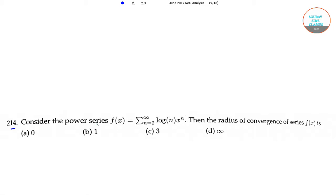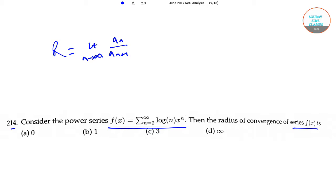The question is: consider the power series f(x) equal to summation from n equal to infinity of log(n) times x to the power n. Then the radius of convergence of series f(x) is: the radius of convergence R equals limit as n tends to infinity of a_n by a_{n+1}, that is limit n tending to infinity of log(n) by log(n+1), which is equal to 1.